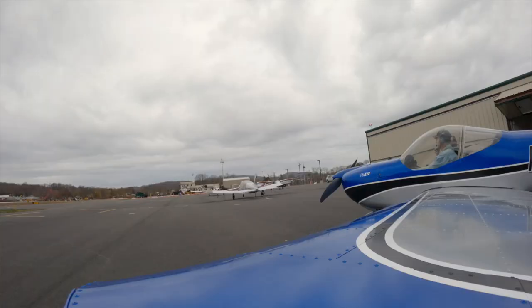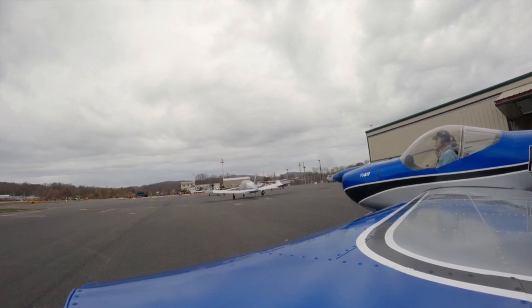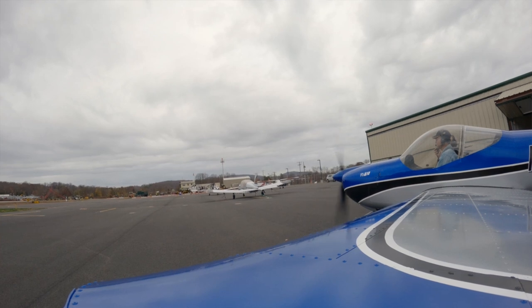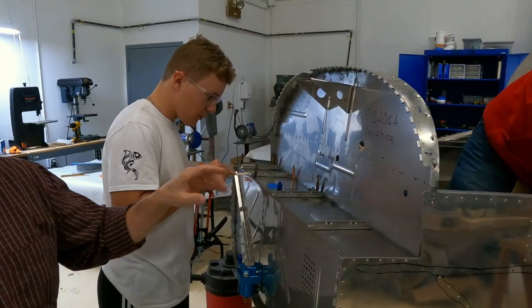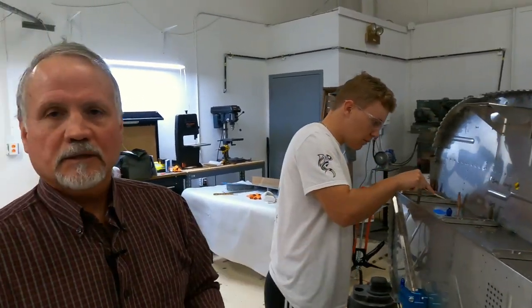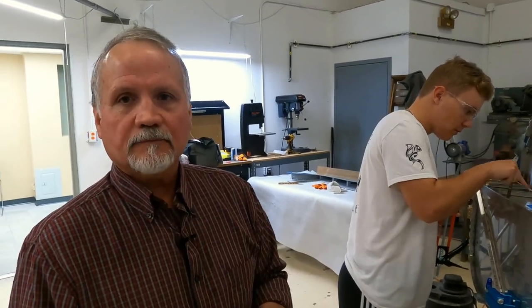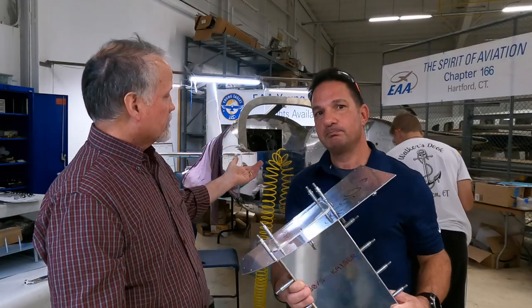They've already finished installation, and what they're doing now is pro-sealing all of the rivet holes per the instructions. On the forward side of this panel, we're talking about the engine and possibility of carbon monoxide, fuel, and of course water. You want to make sure it's all sealed so that you don't get any carbon monoxide, fuel, or water from rain going into the cabin.